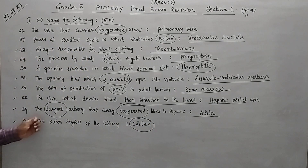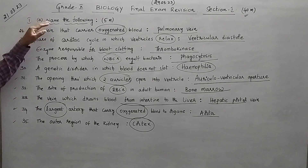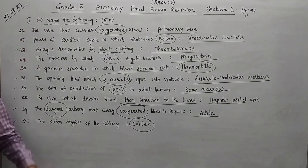Question 35: the outer region of the kidney is called the cortex. These are the important 'name the following' questions from Section 1. In the next class we will move on to question number 1b. Thank you so much.